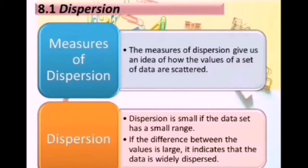The measures of dispersion give us an idea of how the values of a set of data are scattered. Dispersion is small if the data set has a small range. If the difference between the values is large, it indicates that the data is widely dispersed.